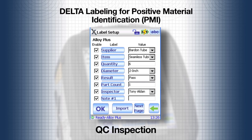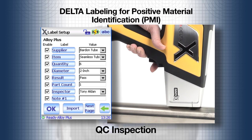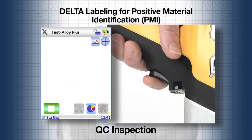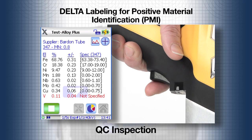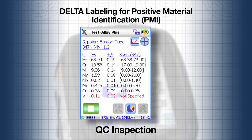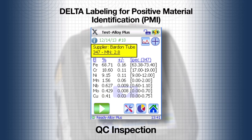Once the label options have been chosen, you can start testing right from the label screen. Place the analyzer on the tube, pull the trigger, and the test begins. The test result for the first tube is 347, the expected grade.